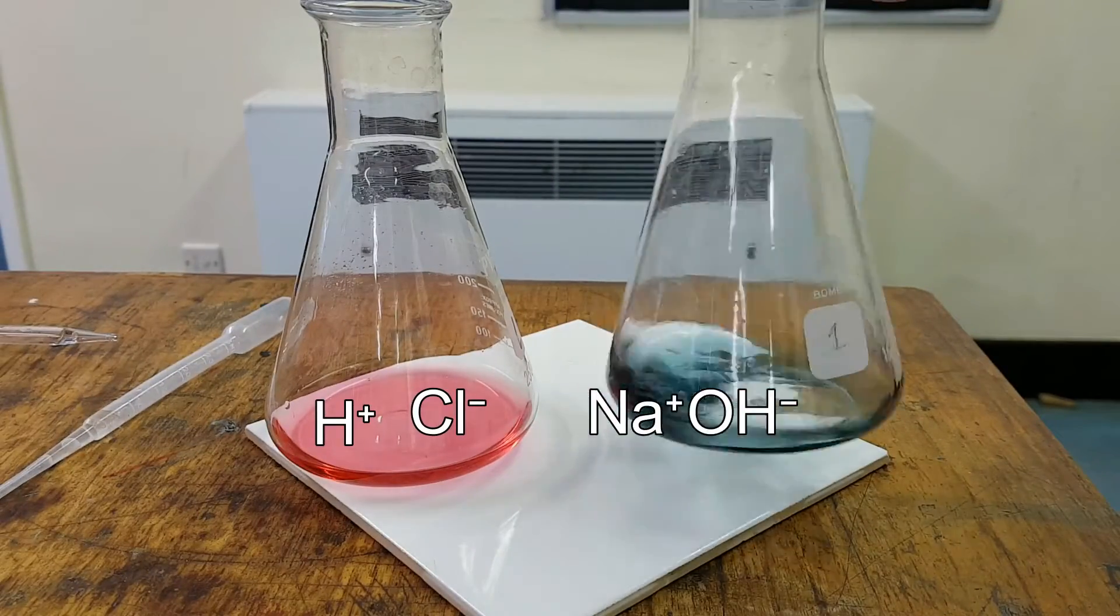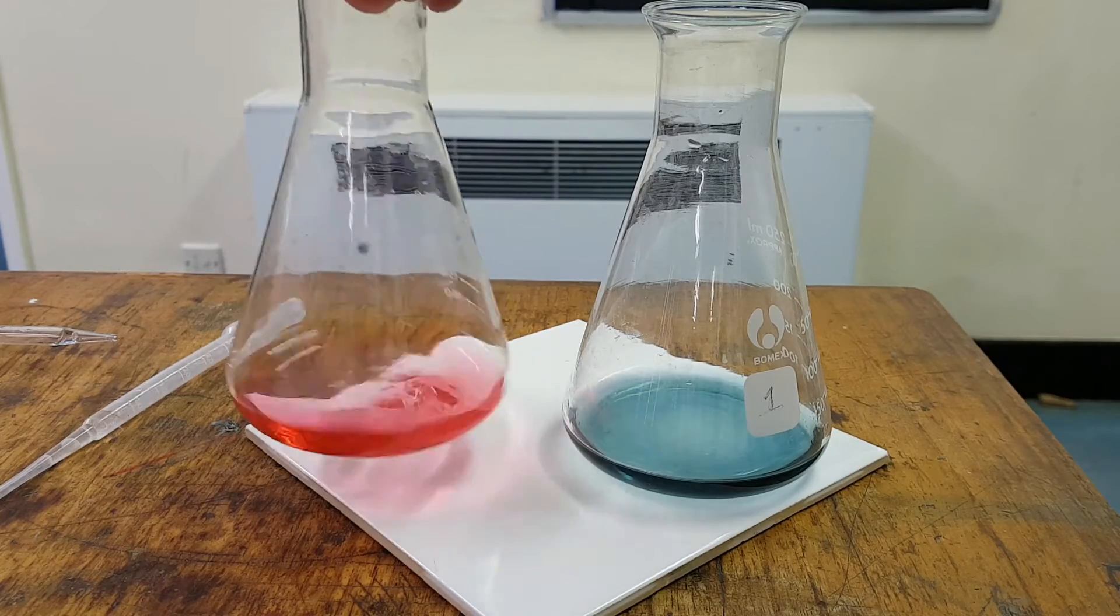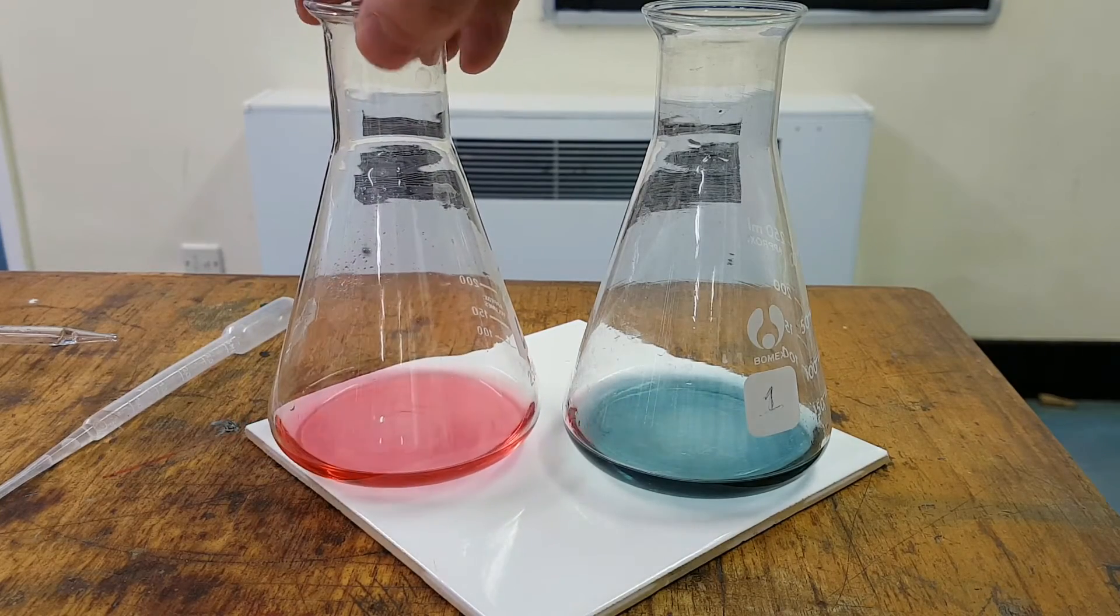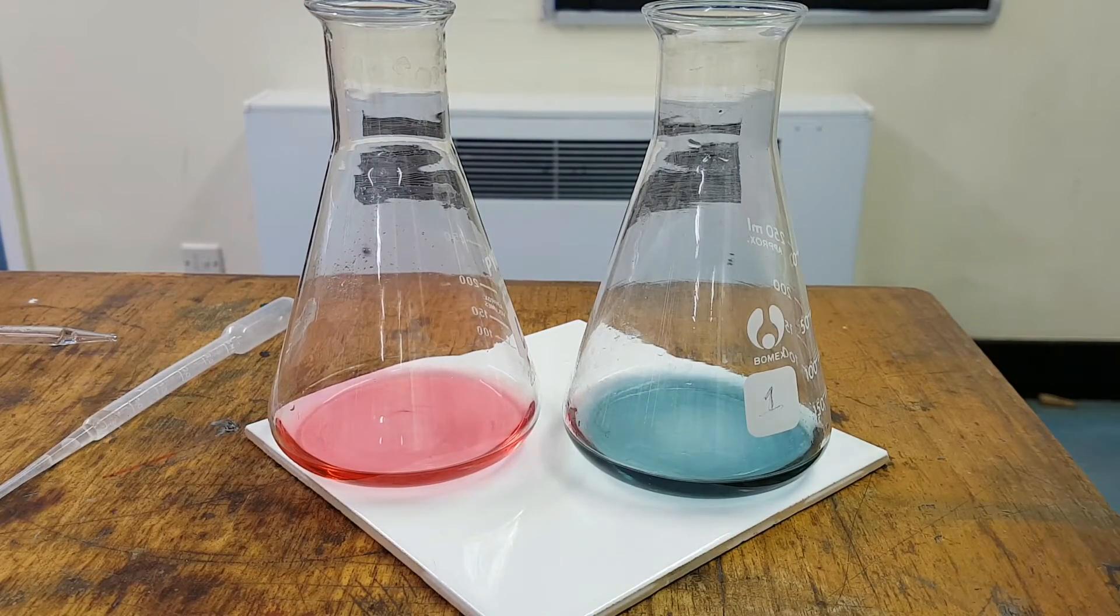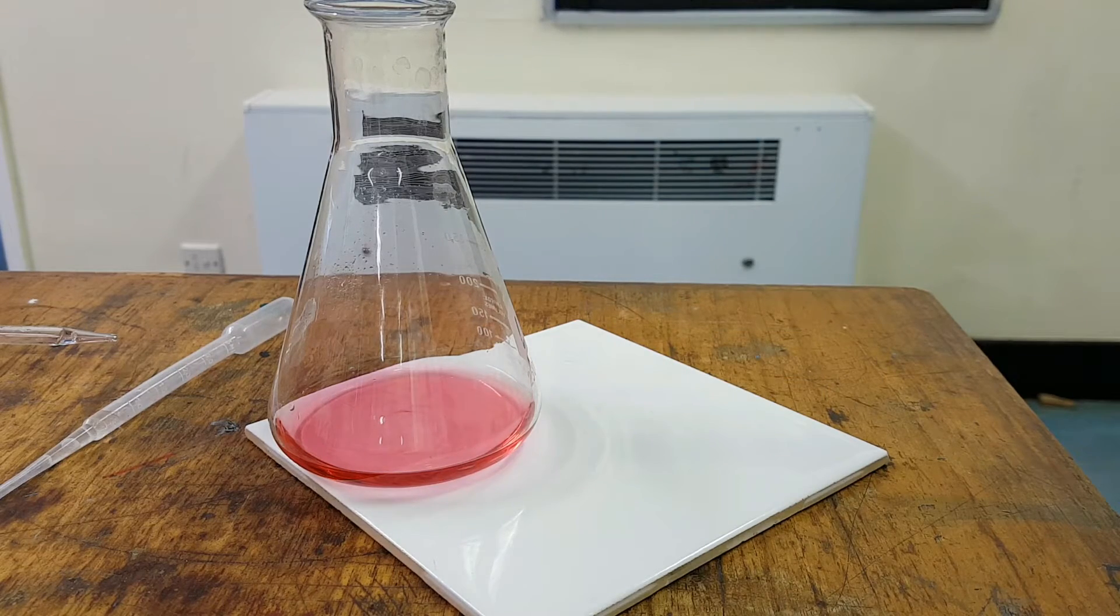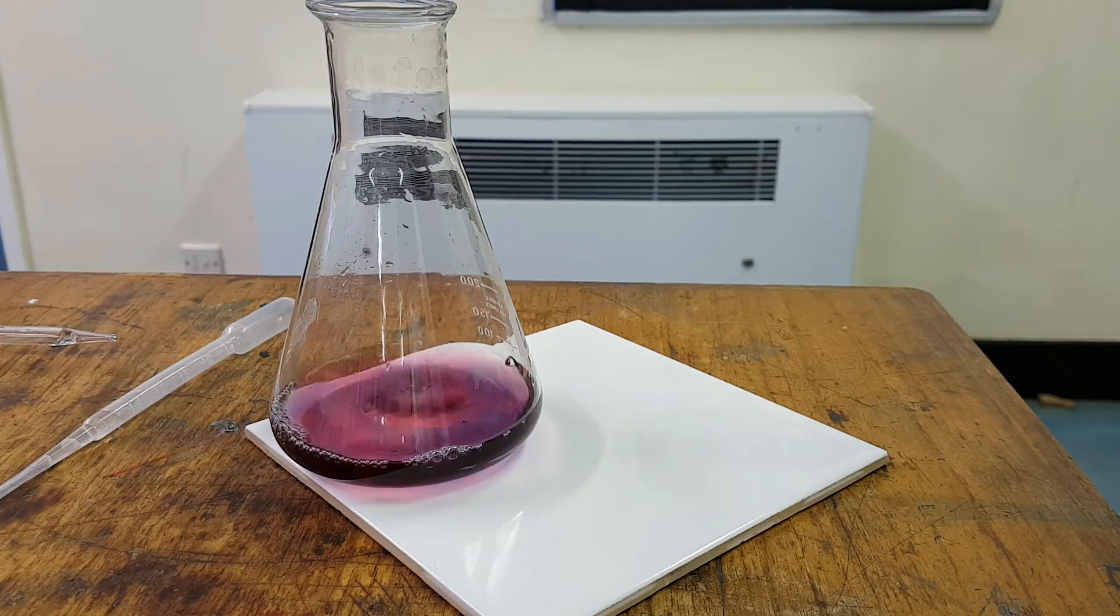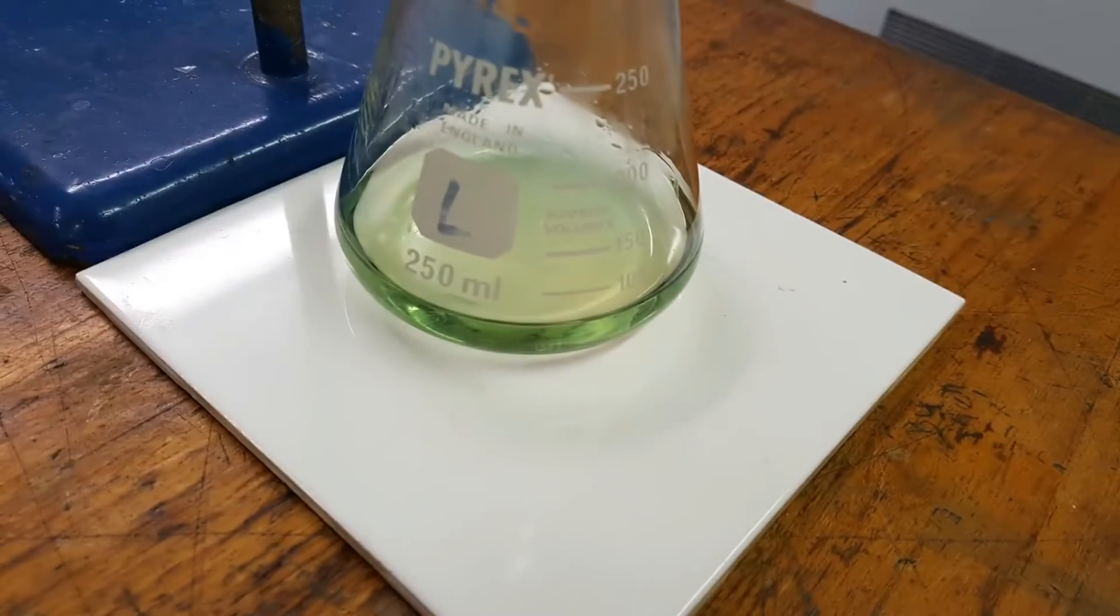On the right here, I have my sodium hydroxide with my Na plus and OH minus ions. And on the left, I have my hydrochloric acid with my H plus and Cl minus ions. Now, if you mix these together in the exact amounts, you'll get a neutral solution, which if I'd got the exact amounts here, it would have gone green, as you can see here.